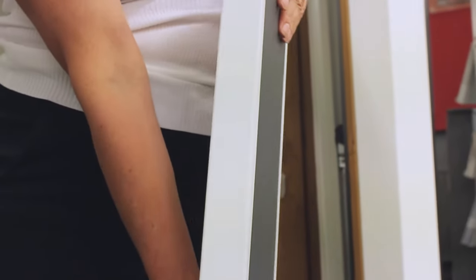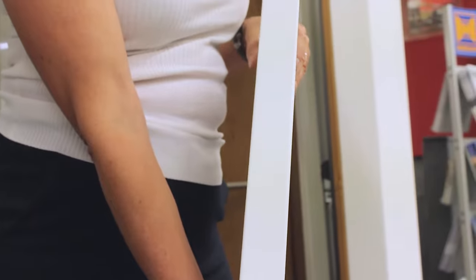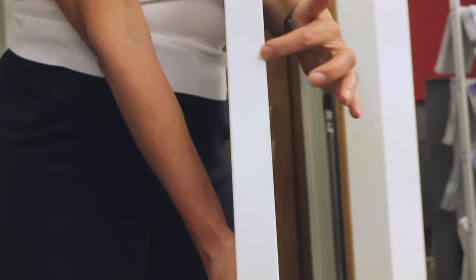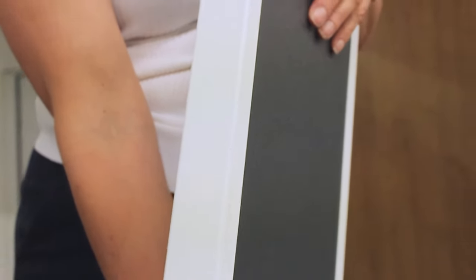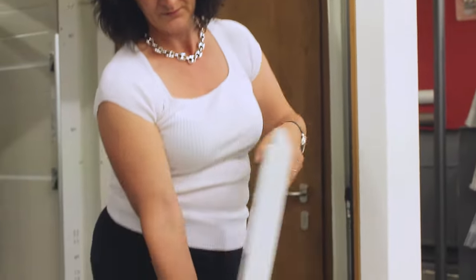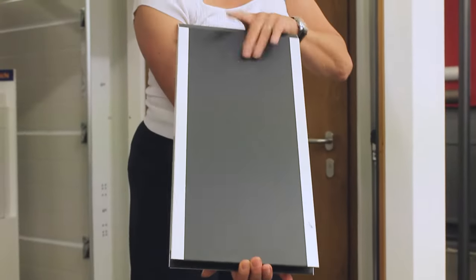Each section is this tall, and the standard sectional garage door is 40 millimeters thick. That's the usual thickness and that's how insulated they are. The inside is polyfoam, the outside is double-skinned steel.